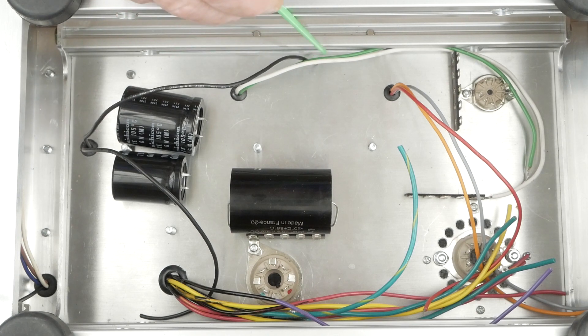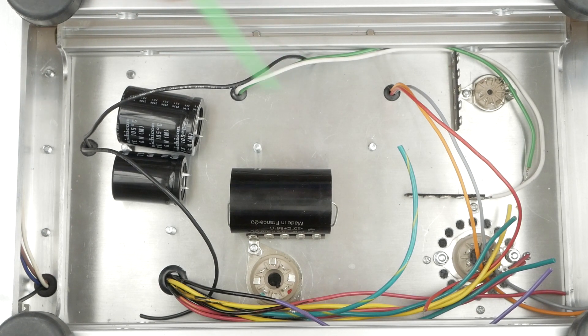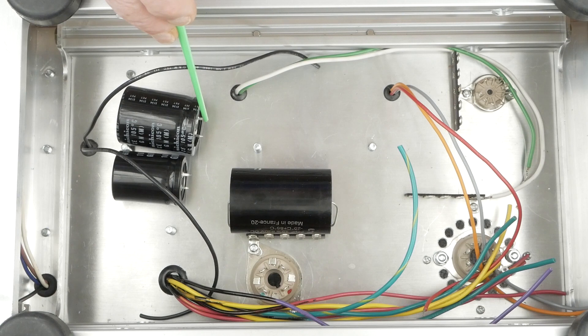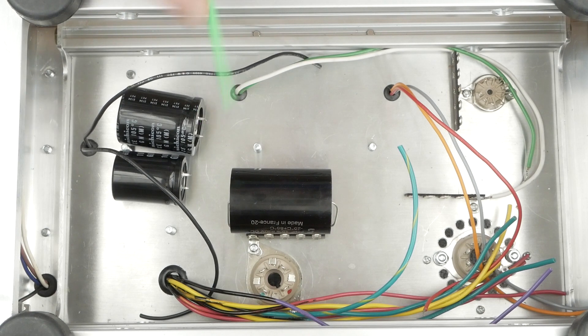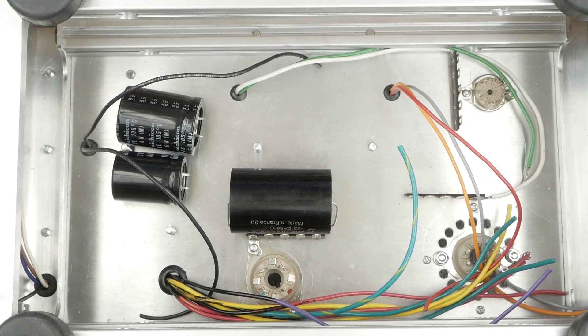And then we can hook the positive lead for the output transformer just straight to this cap too and use this terminal on the cap as the terminal point for those two connections. And just keep it simple.